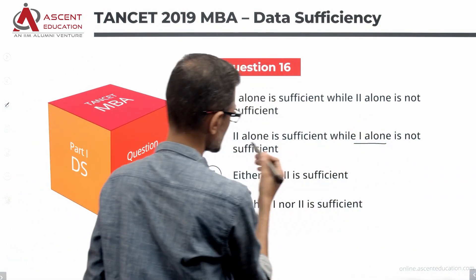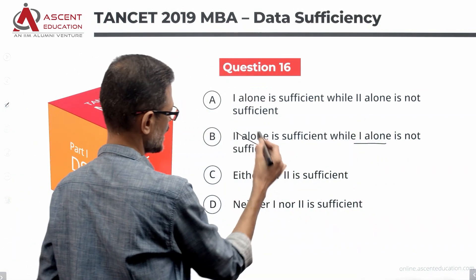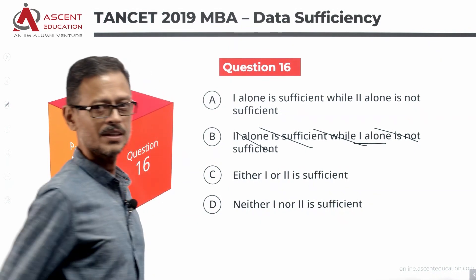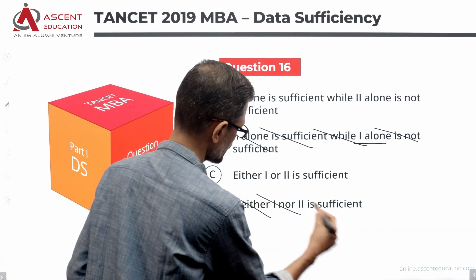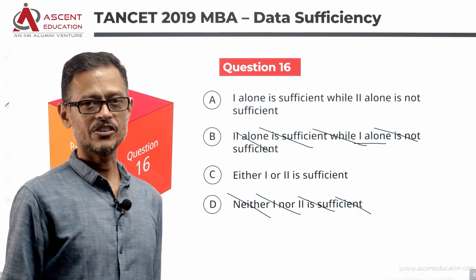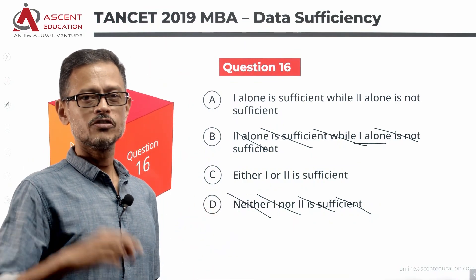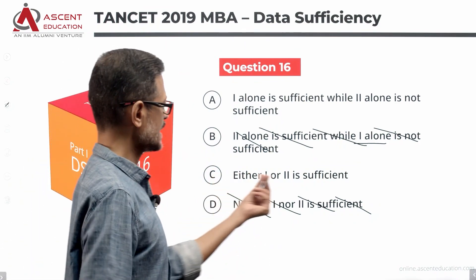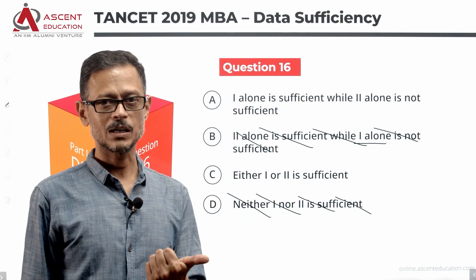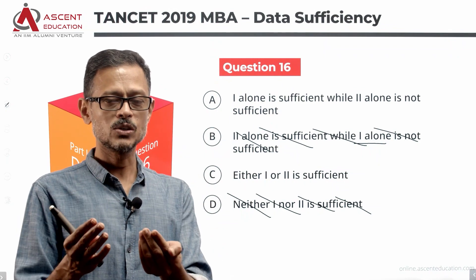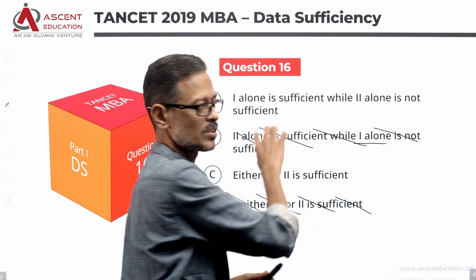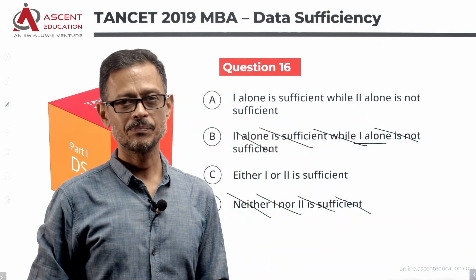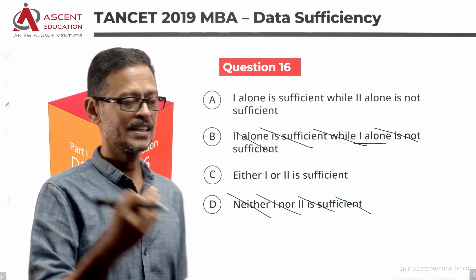So where do we eliminate? We eliminate answer options where one alone is not sufficient. Since Statement one is sufficient, if Statement two is also sufficient, we will say either one or two is sufficient — Answer C. If Statement two is not sufficient, then it is one sufficient, two not sufficient — Answer A. To determine whether it is A or C, let's evaluate Statement two alone.